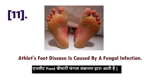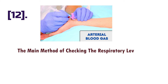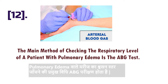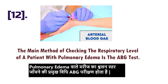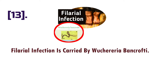Point number eleven: athlete's foot disease is caused by a fungal infection. Point number twelve: the main method of checking the respiratory level of a patient with pulmonary edema is the ABG test.